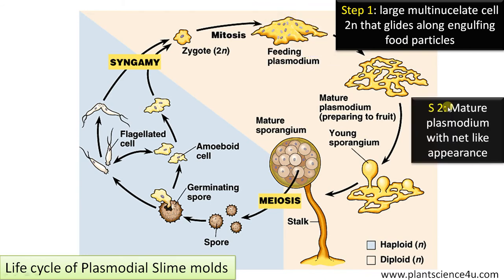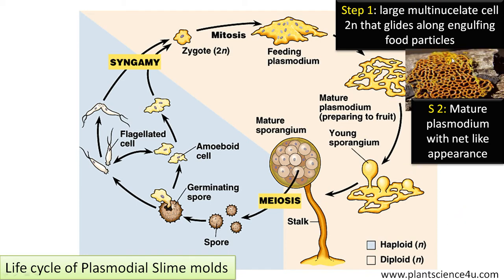Step 2: At maturity, the plasmodium has a net-like appearance. When there is food shortage, it starts producing fruiting bodies. So this is the net-like appearance of the mature plasmodium.